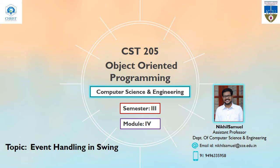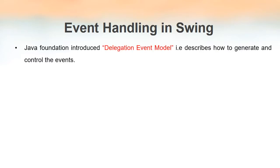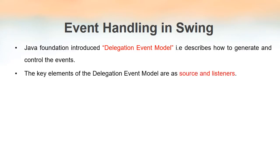Welcome to the beta series of object-oriented programming. In this video lecture we'll be discussing event handling using the Swing package in Java. We have something known as the delegation event model, which is easier to generate events as well as to handle generated events. In the delegation event model we have two key elements: sources and listeners.